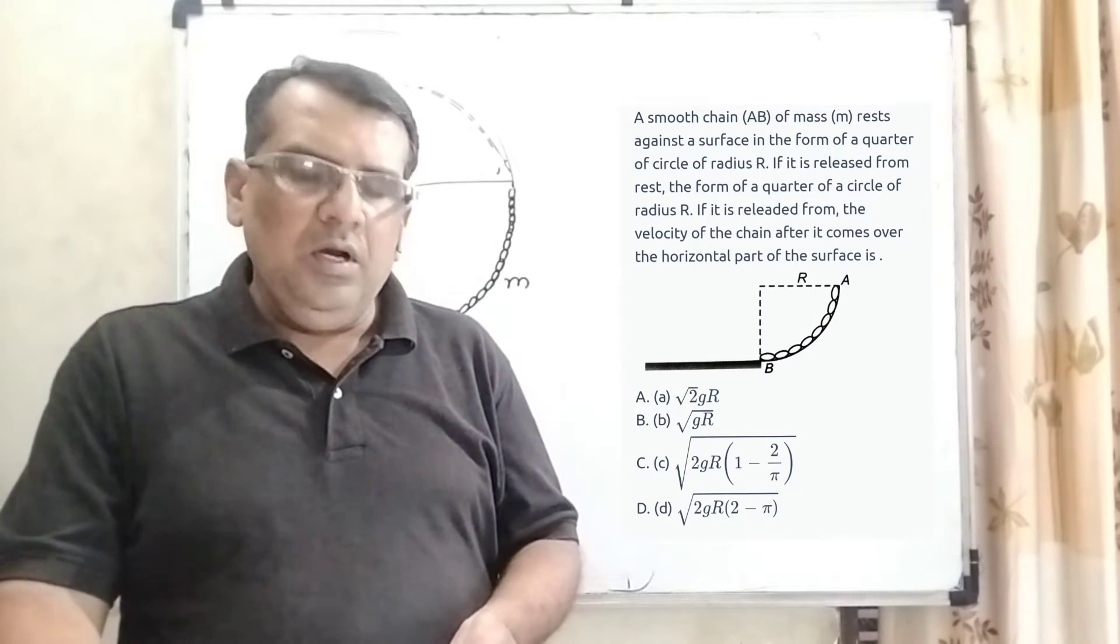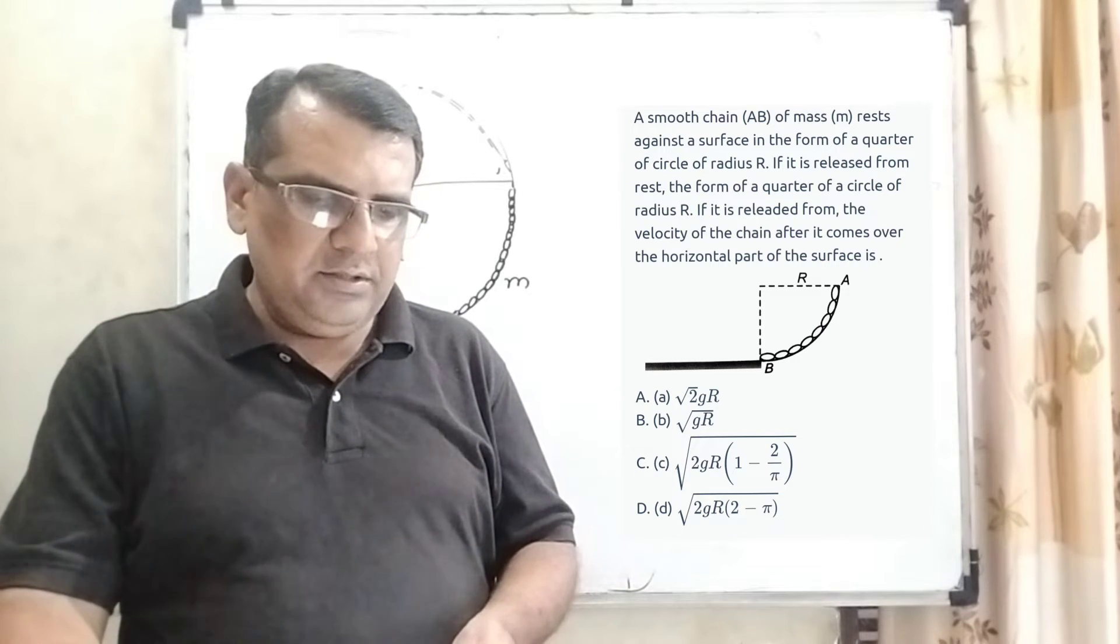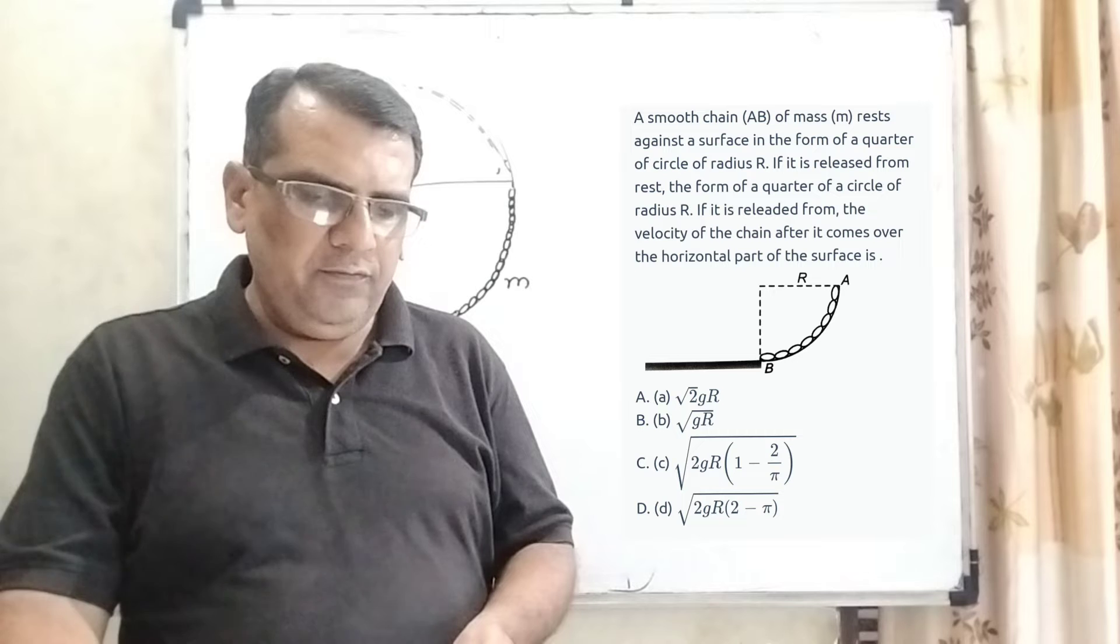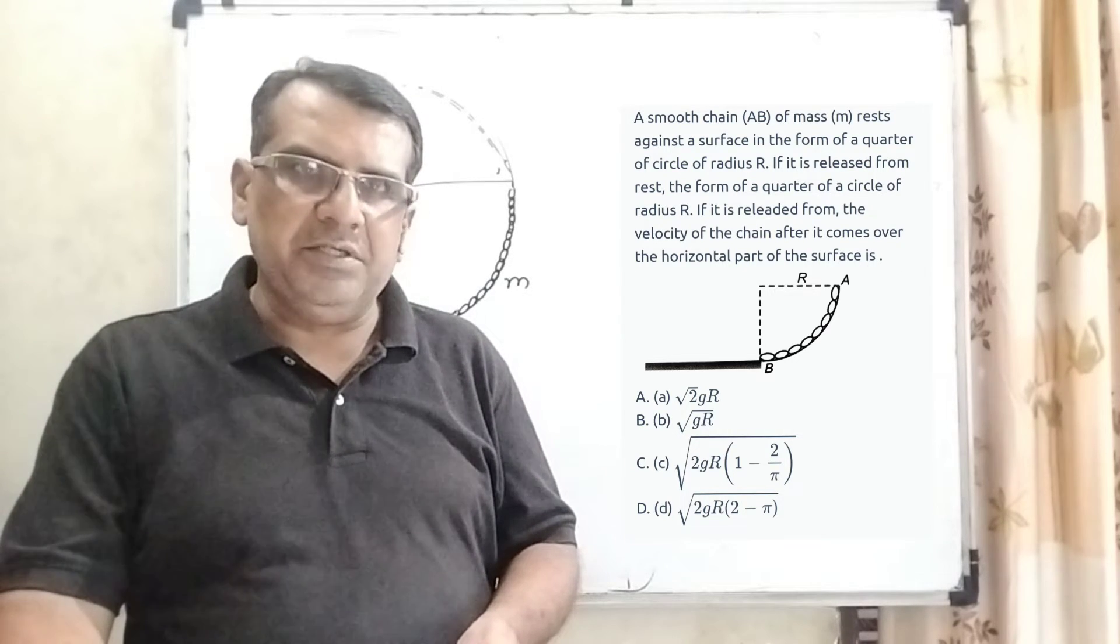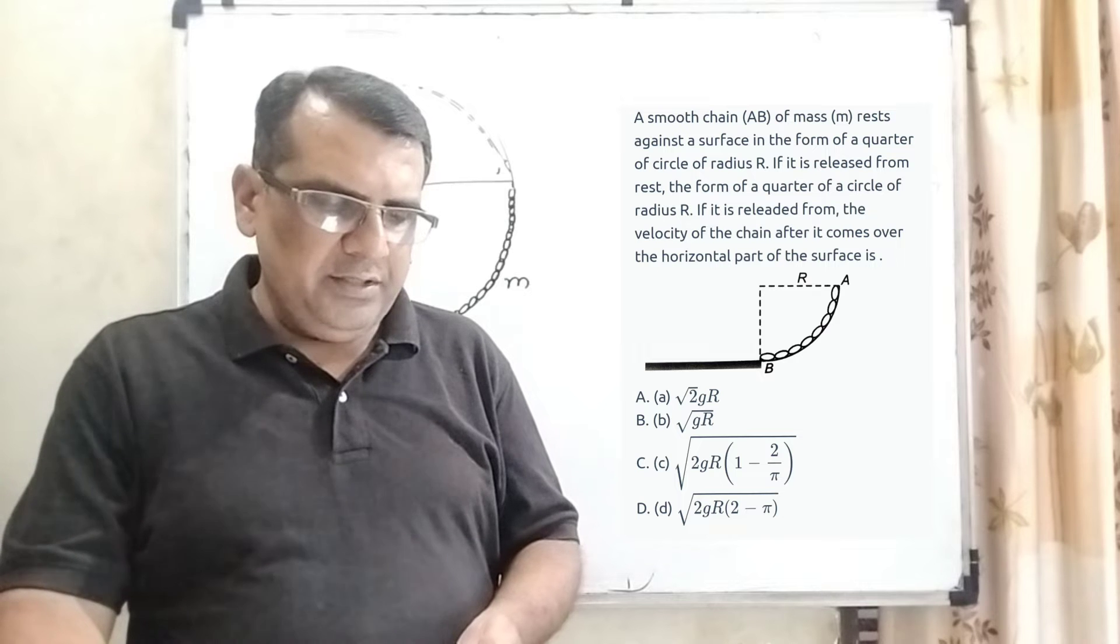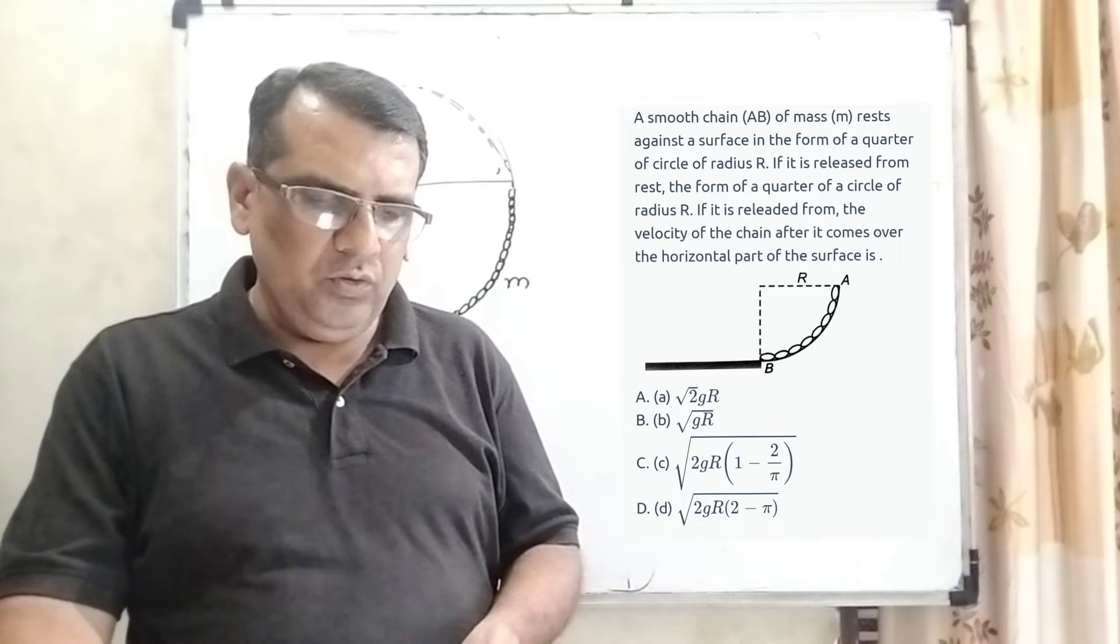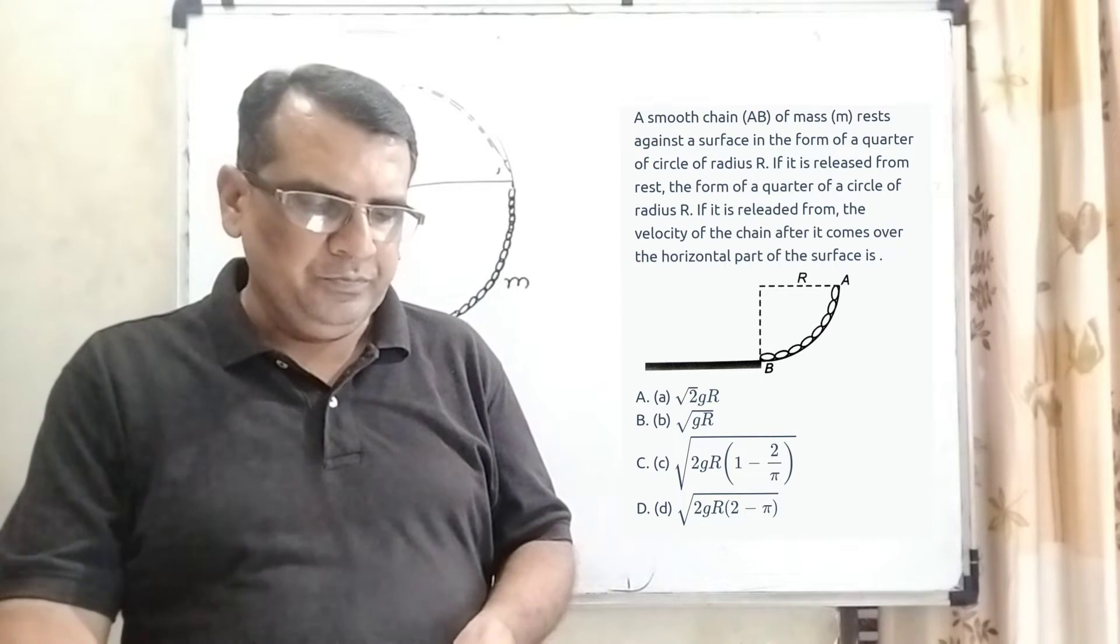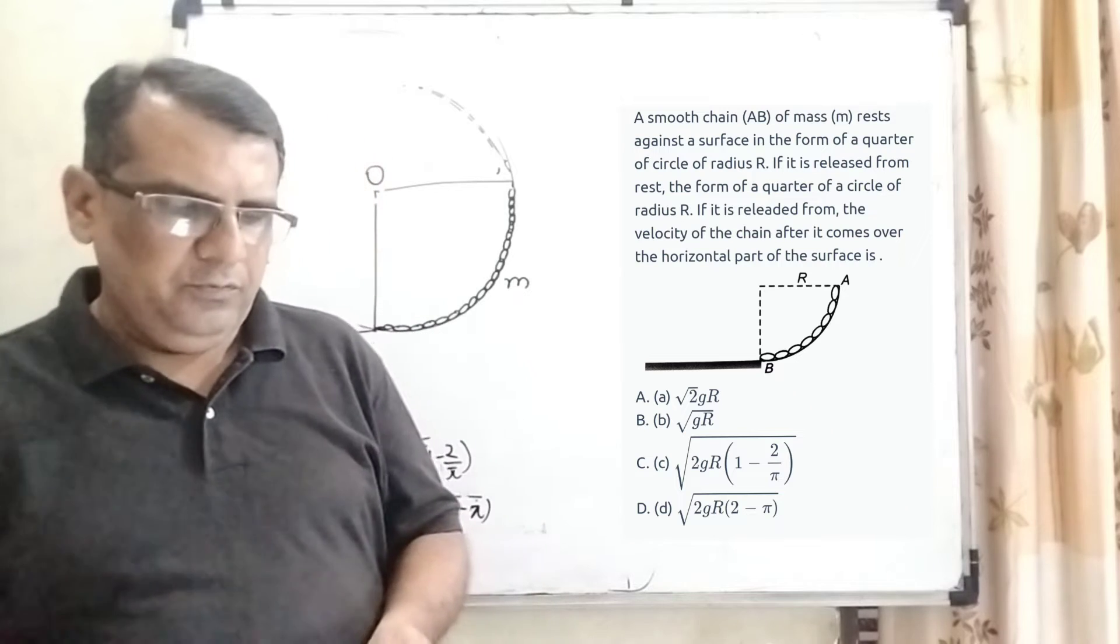Now here is the question. A smooth chain AB of mass small m rests against a surface in the form of a quarter of a circle of radius capital R. If it is released from rest, the velocity of the chain after it comes over the horizontal part of the surface is... Here we have given four options.